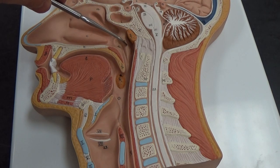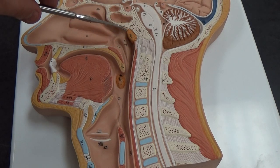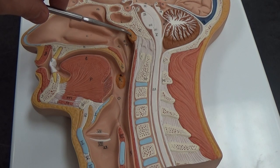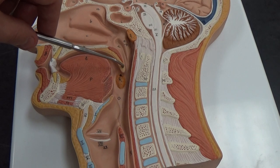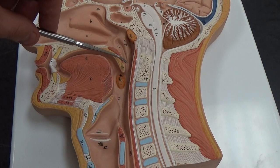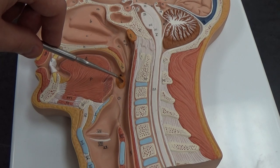The nasopharynx is the region right in here. The pharyngeal tonsil sits in the back. The uvula is what hangs down here. The palatine tonsil is right below that.